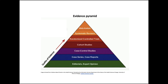The pyramid of evidence is a hierarchy of evidence showing different types of study designs. As you go up the pyramid, the quality of evidence increases. Meta-analyses and systematic reviews provide the highest level of evidence, and PubMed provides filters for each.